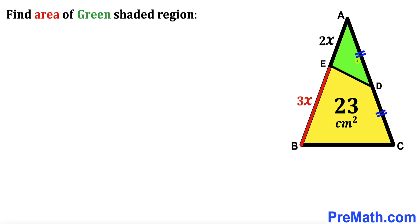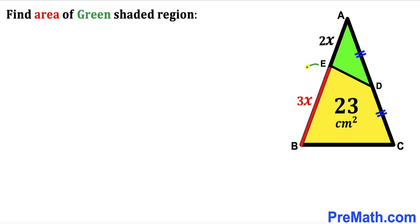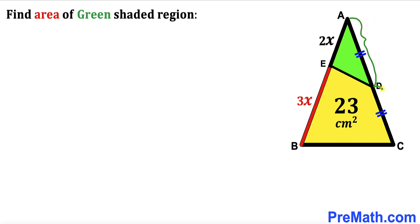Welcome to PreMath. In this video we have got a green shaded triangle AED and a yellow quadrilateral ABCD fully confined in a big triangle ABC, such that the area of the yellow quadrilateral has been given as 23 centimeter square. Moreover, segment AE has length 2x, segment EB has length 3x, and D is a midpoint on side AC — in other words, AD equals CD. Our task is to calculate the area of the green shaded triangle AED.